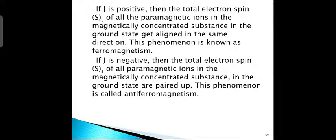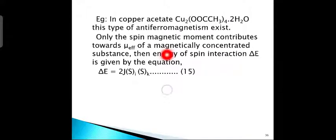Sᵢ and Sₖ are the total electron spins of the i-th and k-th metal atoms or metal ions of the substance. J is known as the exchange coupling constant and is a measure of the strength of interaction between the total electron spins of the metal ions. If J is positive, then the total spin S of all the paramagnetic ions in the magnetically concentrated substance in the ground state get aligned in the same direction — this phenomenon is known as ferromagnetism.